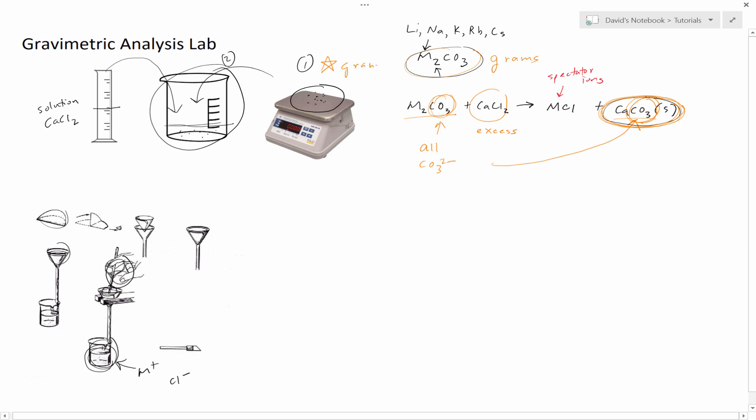Let's say it's like 1.204 grams of unknown. Then what we're going to do is weigh this at the end. We filter it, carefully remove this filter paper, and weigh this at the end. This is our calcium carbonate. We weigh this. It's like a white powder. Let's say it comes out to be like 1.102 grams of calcium carbonate.